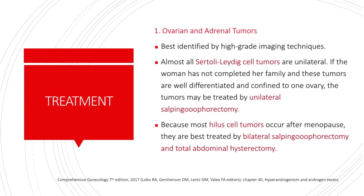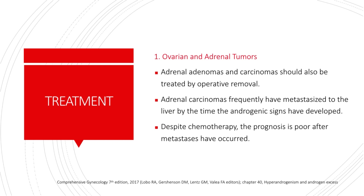Now for the last part, we tackle the treatment of hyperandrogenism. For ovarian and adrenal tumors, these are best identified using high-grade imaging techniques. Almost all Sertoli-Leydig cell tumors are unilateral, so if the woman has not completed her family and the tumor is well differentiated and confined to one ovary, it may be treated by unilateral salpingo-oophorectomy. Because most hilus cell tumors occur after menopause, they are best treated by bilateral salpingo-oophorectomy and total abdominal hysterectomy. Adrenal adenomas and carcinomas should also be treated by operative removal. Adrenal carcinomas frequently have metastasized to the liver by the time androgenic signs develop, and despite chemotherapy, the prognosis is poor after metastasis.